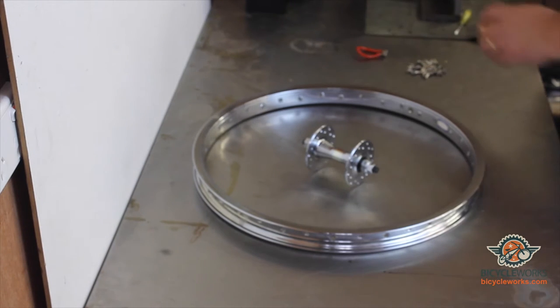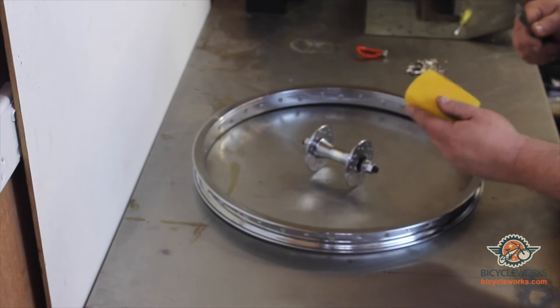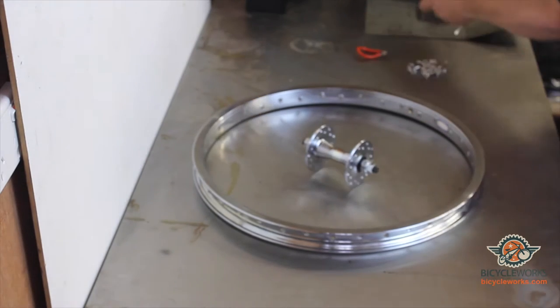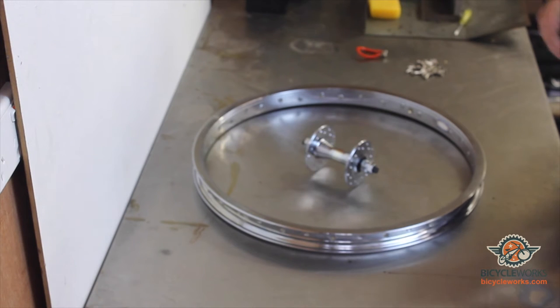Just a wheel building tip: always use a bar of soap, run your spokes across it. This lubricates the spokes and stops them from freezing inside the nipples once you've built the wheel.